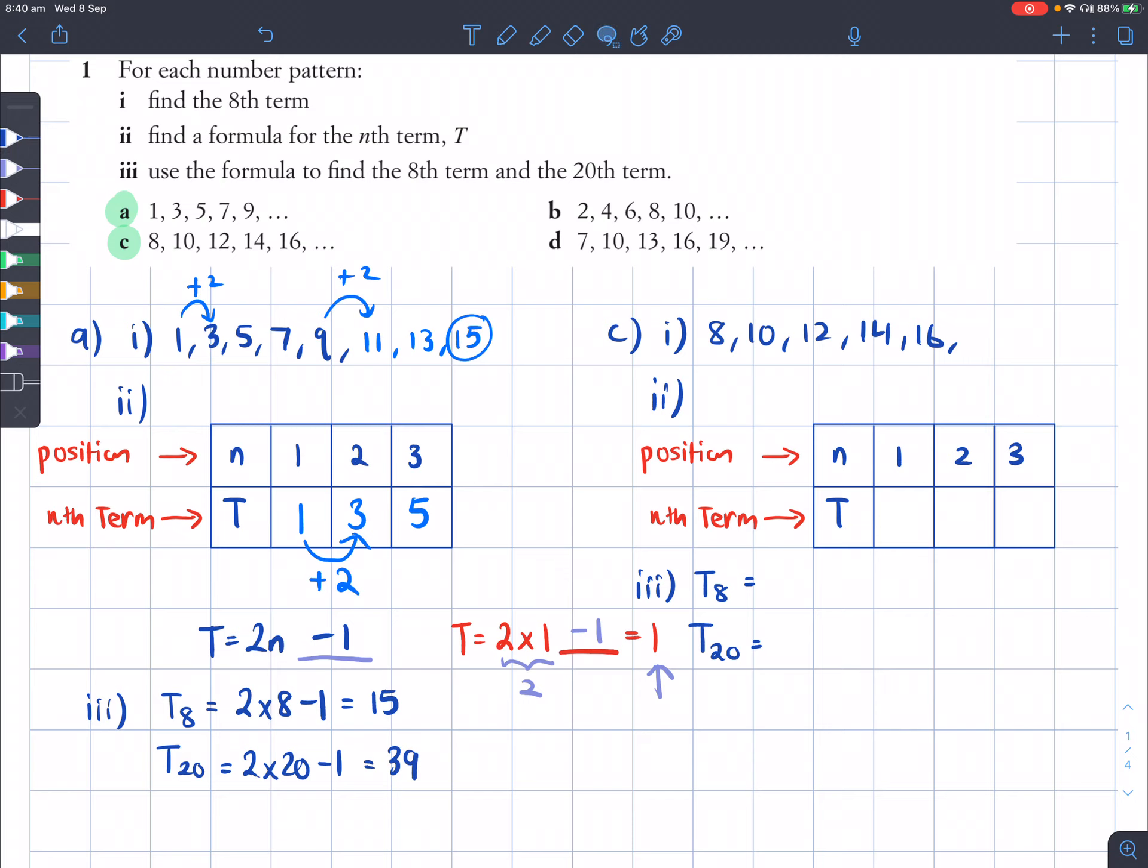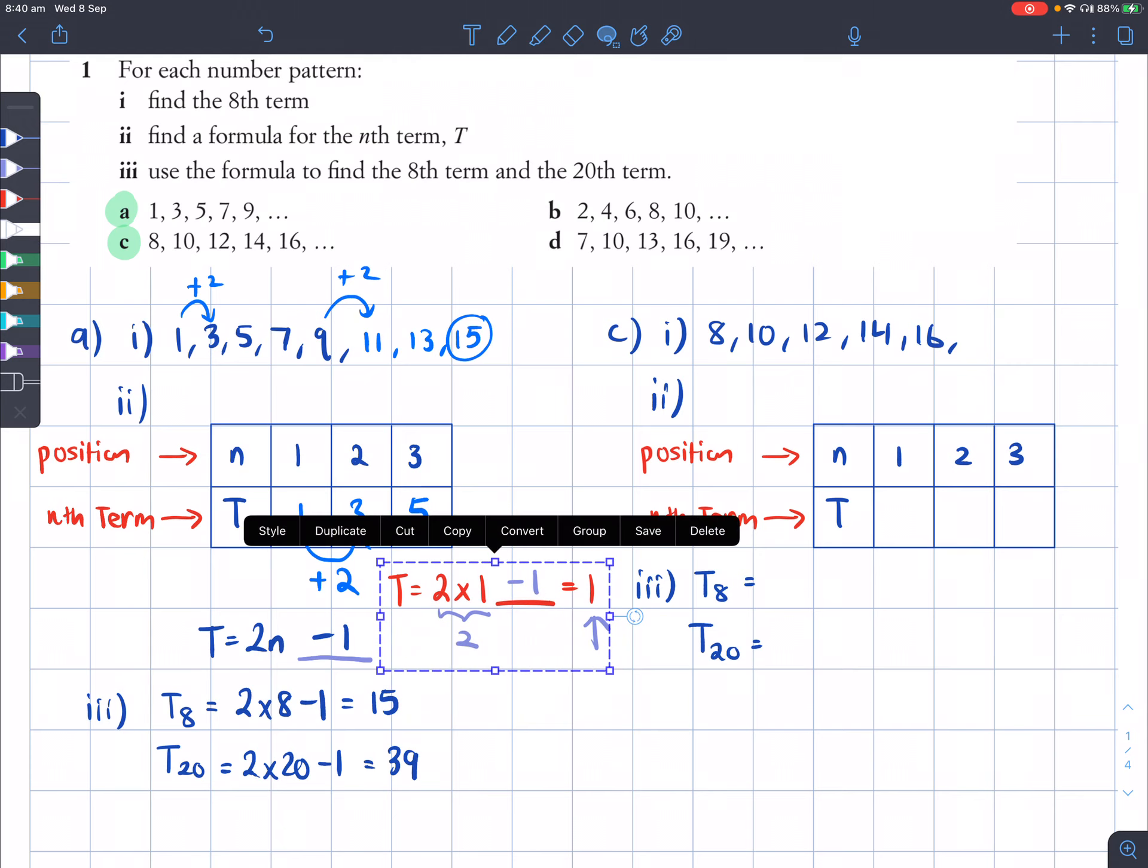Now let's have a look at a similar piece of working out for question C. For C, you've got now the numbers 8, 10, 12, 14, 16. So this still goes up by a value of 2.